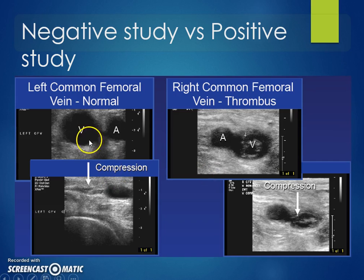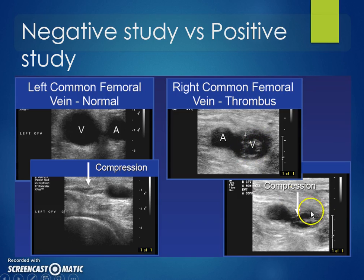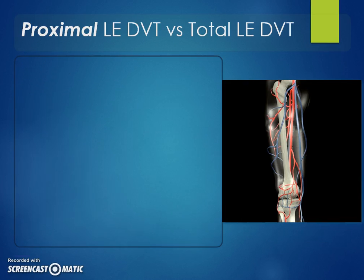Here you can see a vein and artery with compression — the vein is completely obliterated. Versus when there's a clot inside with compression, you can see the anterior and posterior walls do not meet.